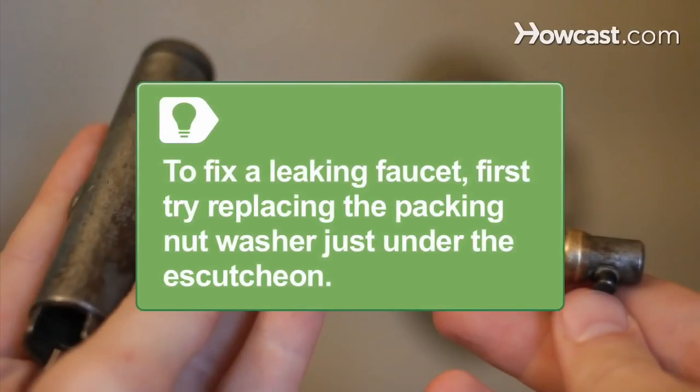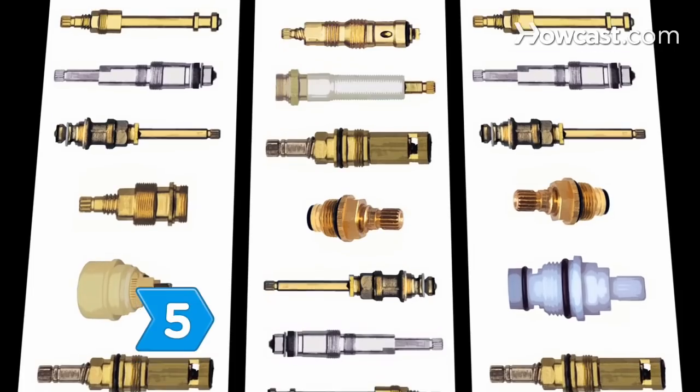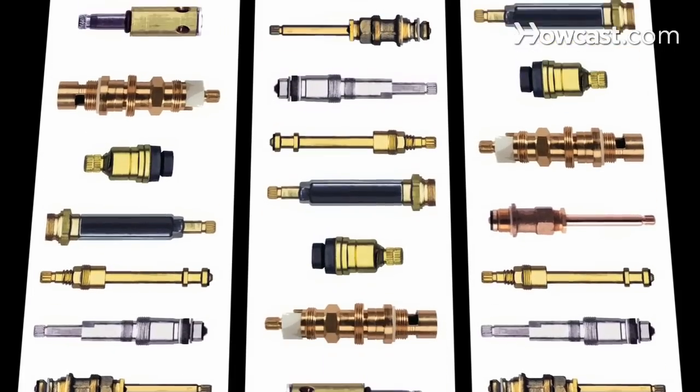To fix a leaking compression faucet, first try replacing the packing nut washer just under the escutcheon. Step 5. Take any damaged parts to a hardware store. Make sure you get the right replacements.